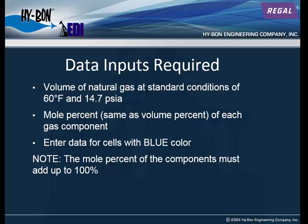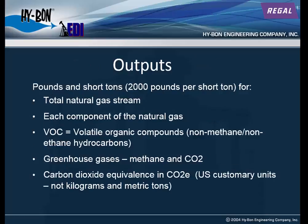The mole percents for all components should add up to 100%. The outputs are in terms of pounds and short tons — 2,000 pounds per short ton — for the total natural gas stream and each component of the natural gas, provided you enter data for that component on the natural gas calculator.